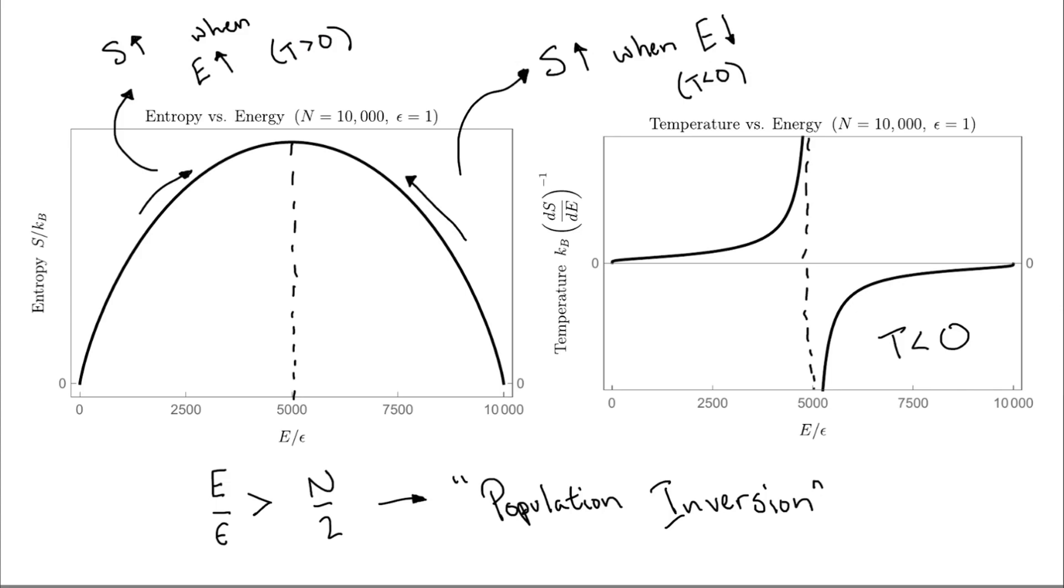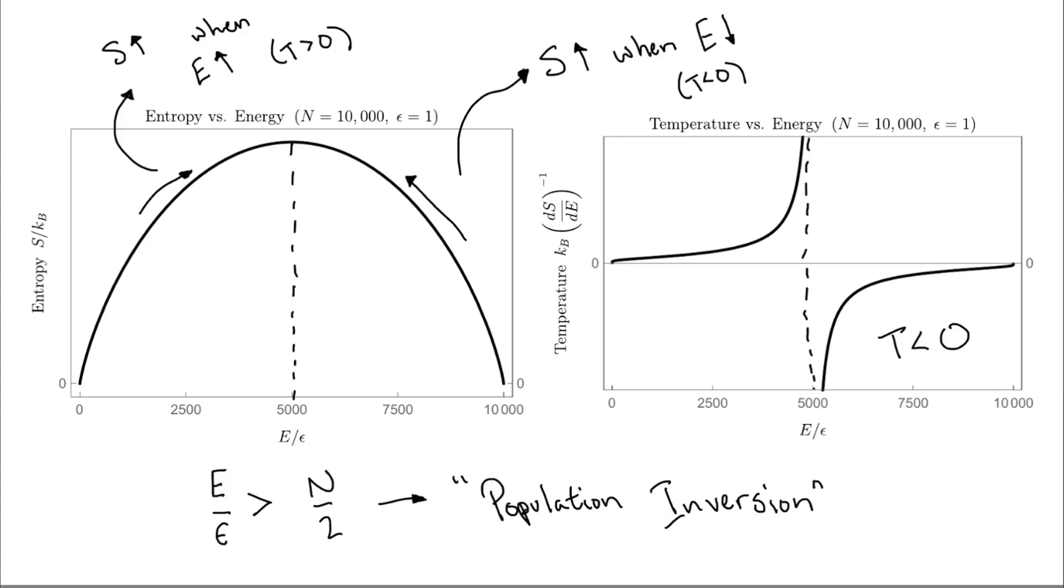One great example of a useful application of negative temperature is in lasers. If an electron is in an excited state in an atom, and a photon comes by with the exact energy as that between the ground state and this excited state, it can actually force the electron to decay to the ground state and emit a second photon.